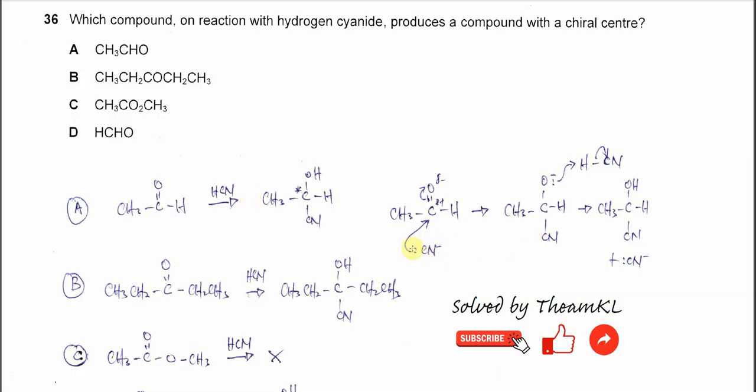The cyanide ion will donate a lone pair to the partial positive carbon. The pi bonds will break and these electrons will move to the oxygen, forming the oxide here. This oxide will use one of the lone pairs to get the proton from the HCN, and eventually it will form this compound, the cyanohydrin.